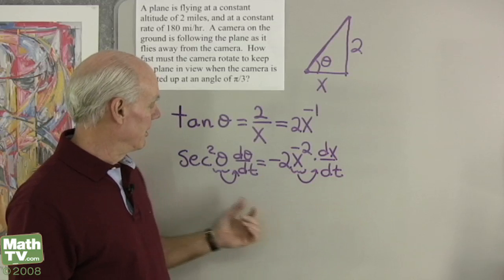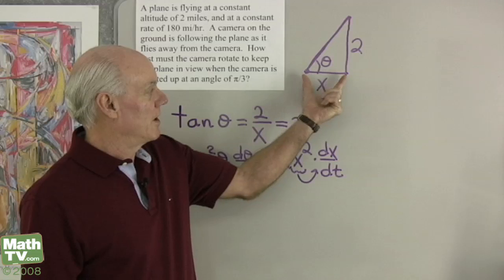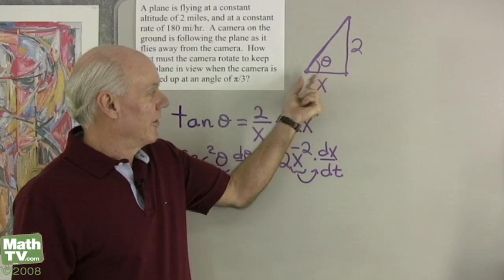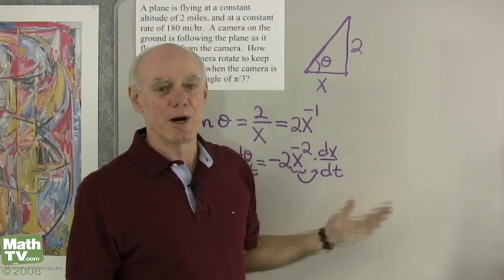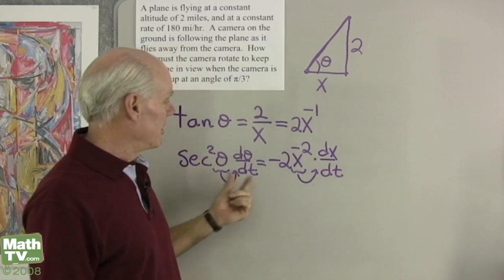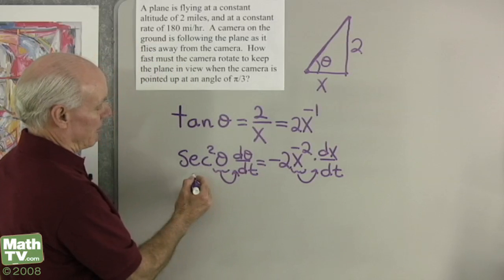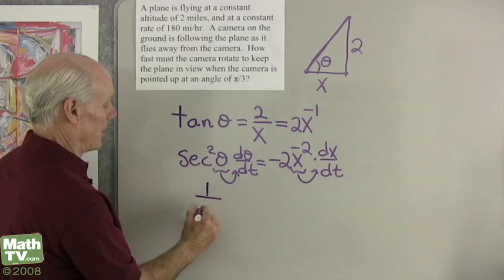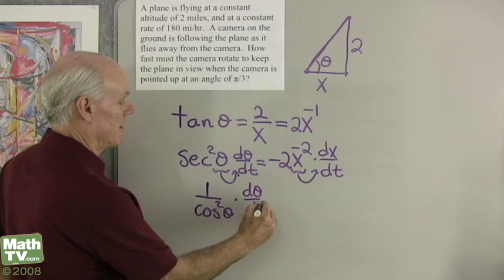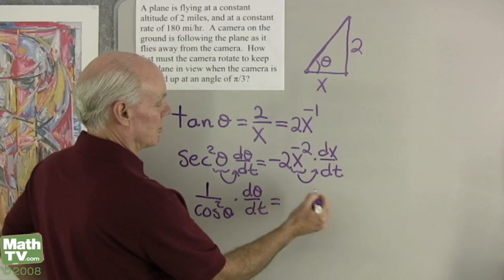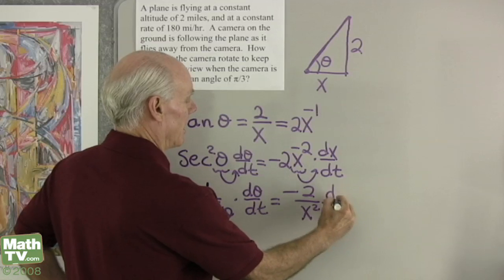I have theta. I can find x and dx dt — the rate of change of x with respect to time — which is just the speed of the plane going in that direction. So dx dt is 180 miles per hour. d theta dt is what I'm looking for. I'd rather work with cosine here, so: 1 over cosine squared theta times d theta dt equals negative 2 over x squared times dx dt.